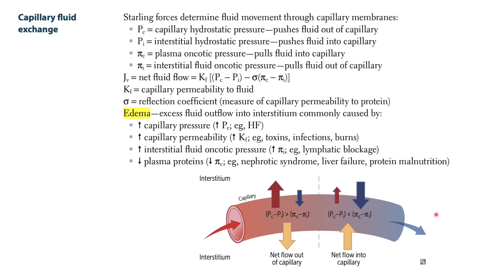In summary: this bracket is pro-edema, and this bracket is anti-edema. Anything that increases the pro-edema side more than the anti-edema side leads to edema, and vice versa. Remember the algebra: if PC goes up, the whole pro-edema bracket goes up because it's the positive term; similarly, if πI goes up, that bracket increases. Anything increasing the anti-edema bracket keeps fluid inside.